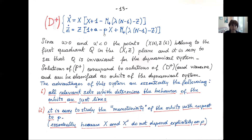This dynamical system depends on the exponent P, and the aim is to derive results according to the value of P, in particular to deduce the existence of a critical exponent. The dependence on P is very simple — it appears only in the second equation — and it is not difficult to deduce a monotonicity of the behavior of orbits with respect to P, which is crucial for determining the critical exponent.